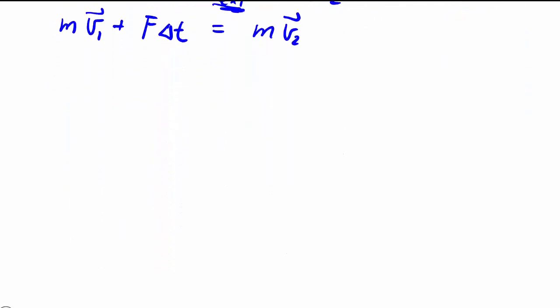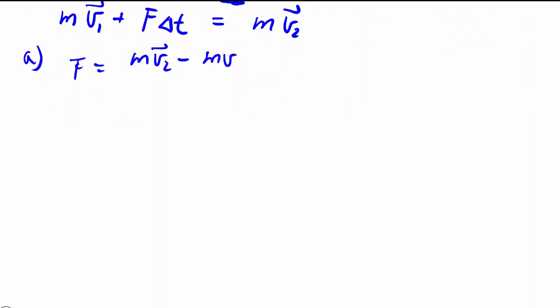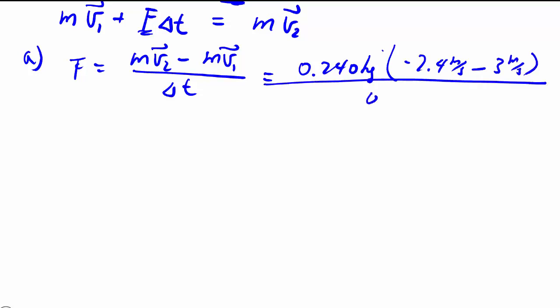For part A, they want the force. To solve for the force, really it is as simple as rearranging to isolate F, plugging in numbers, and we're going to factor out the mass. Final velocity is negative, initial velocity is positive, all divided by the time which they tell us. We're assuming that the force is constant, or we're using the average force for the whole time, just to make the math simple.